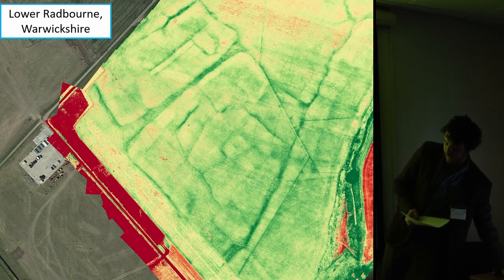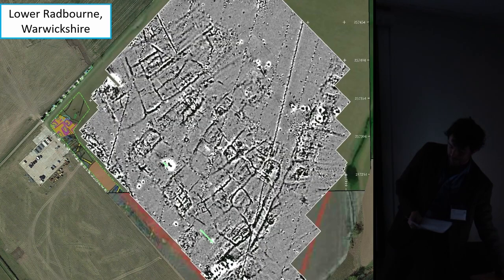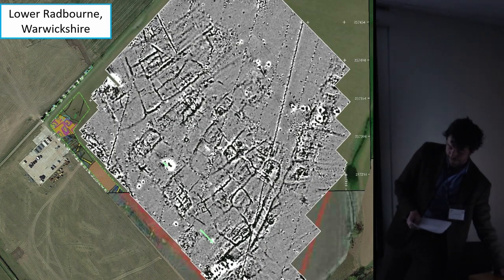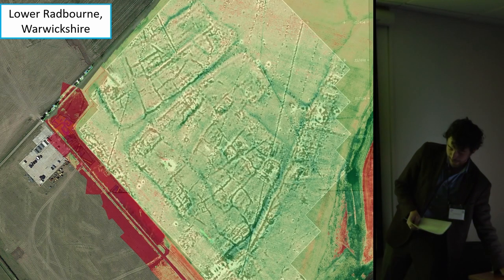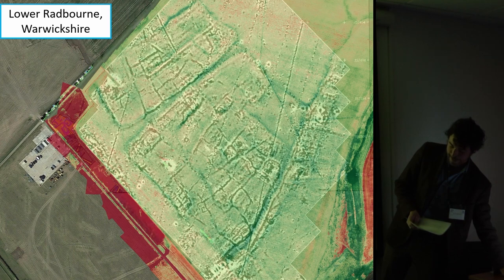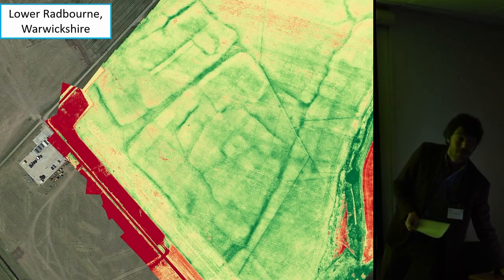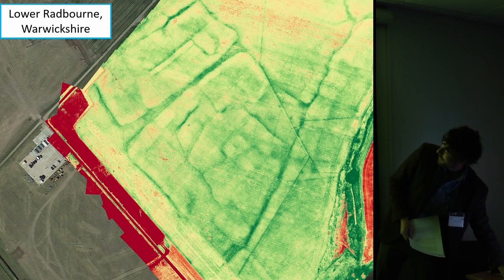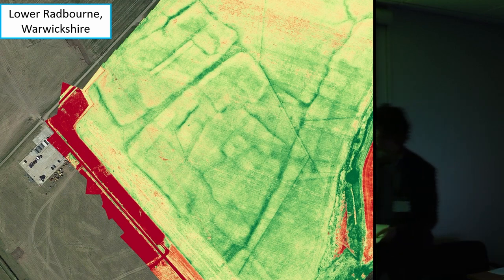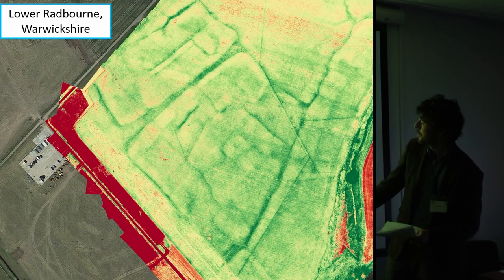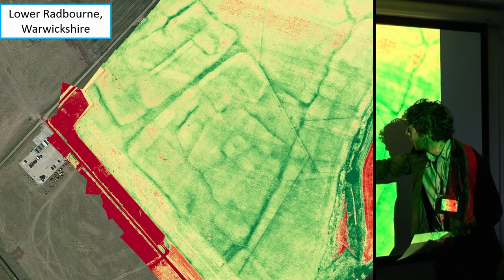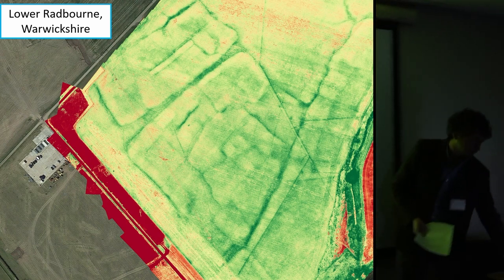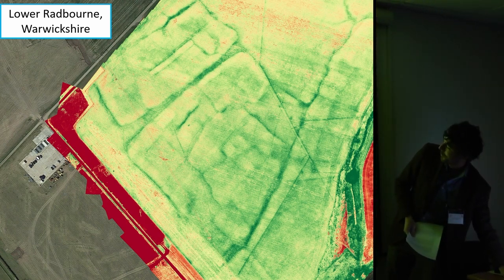If we think of hollow ways as a physical manifestation of movement through the settlement and compare this to the structural elements shown in the geophysics, we can see how people moved in and around Lower Radbourne — not only through the main thoroughfares but also by a network of trackways, what I'd call ginnels, around the back of the settlement. This leads us to think about mitigation strategies: what areas of interest have we got and how would we target them?